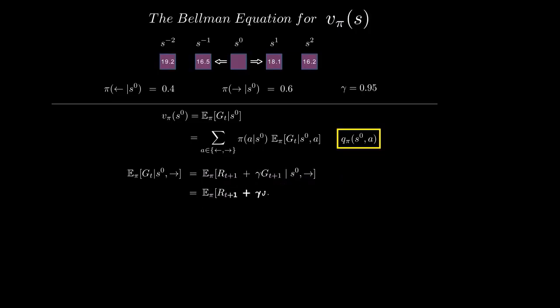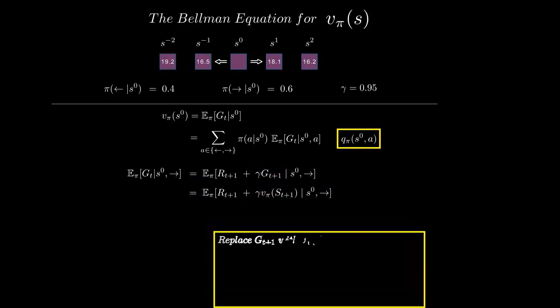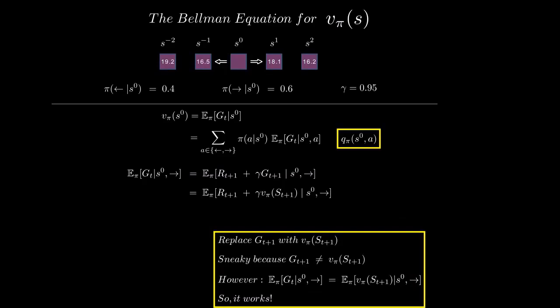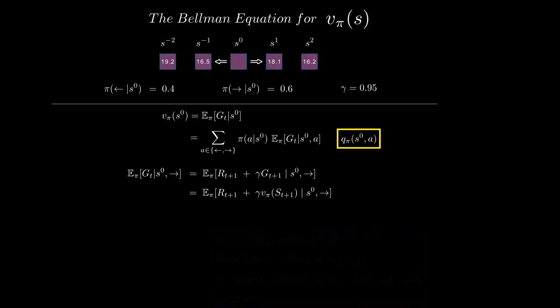What I've done here is I've replaced G_{T+1} with what you get when plugging in the randomly determined next state into the value function. This is sneaky because they're not equal. However, in expectation, they are. This isn't too hard to see if you recall the definition of the state value function and apply the law of total probability. But more importantly, because it's true, this substitution works.